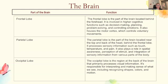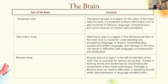The parietal lobe is located near the top and back of the head, behind the frontal lobe. It processes sensory information such as touch, temperature, and pain, and plays a role in spatial awareness and integration of sensory information from various parts of the body. The occipital lobe is the region at the back of the brain that primarily processes visual information — it's responsible for interpreting what we see, including recognizing shapes, colors, and motion. The temporal lobe is located on the sides of the brain near the ears; it processes auditory information and is involved in memory, language comprehension, and some aspects of emotion and perception.